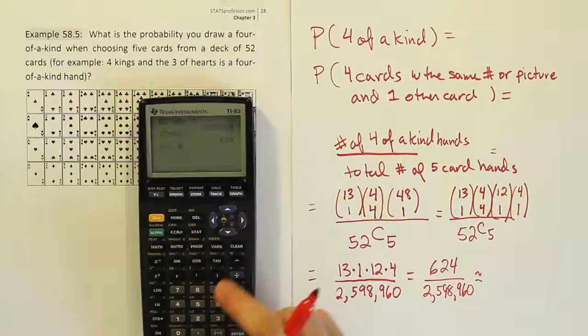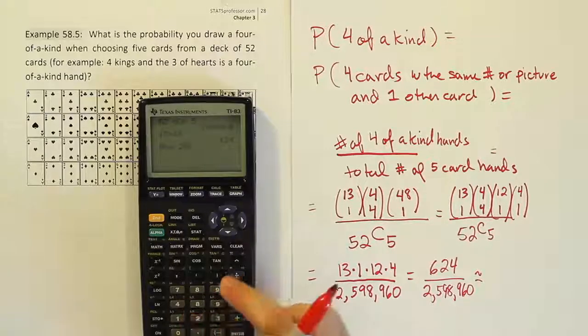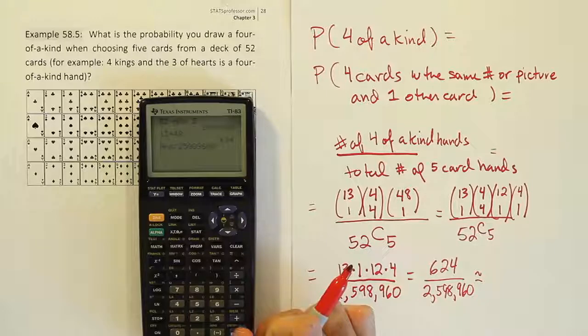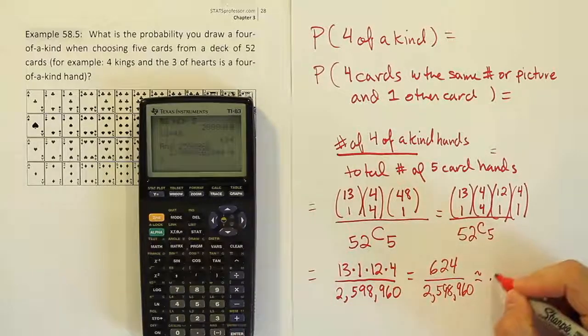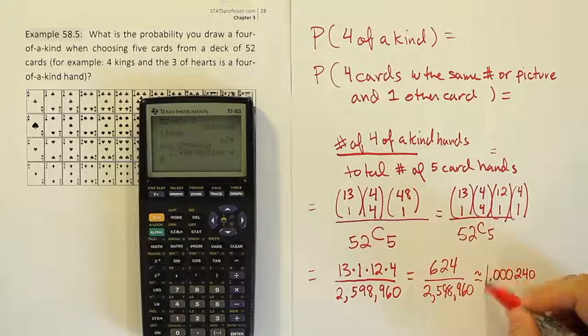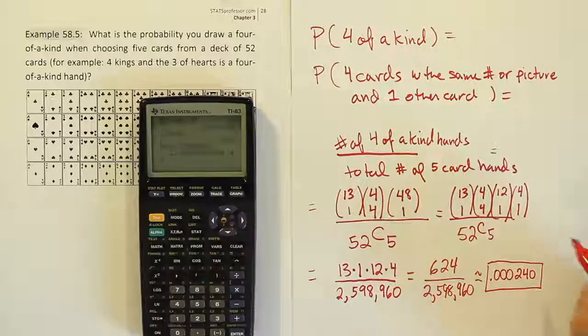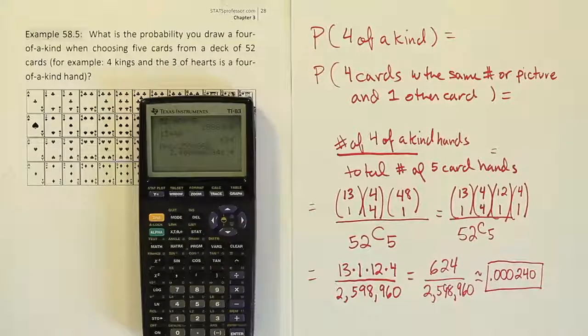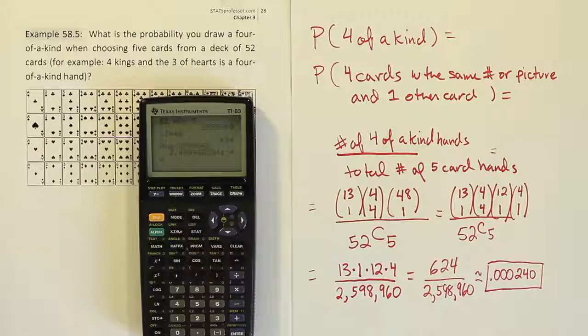And so that's your answer. And if I divide that, it works out to be scientific notation again, three zeros and 2,4,0. So it's a pretty small probability that that occurs. It's a pretty small chance that you would grab five cards from a deck of 52 cards and randomly pull out a four of a kind. But there's your answer.